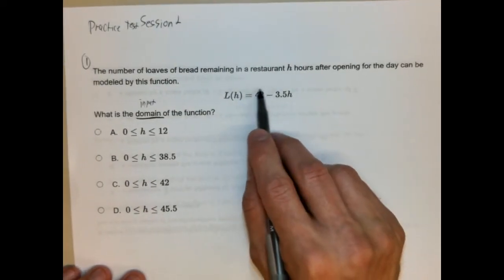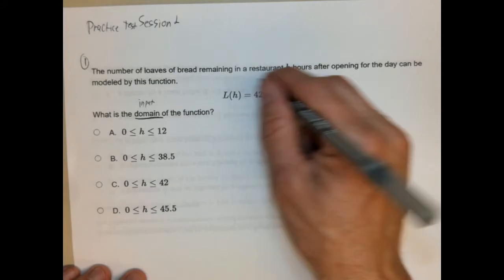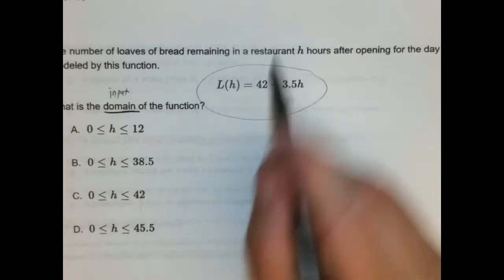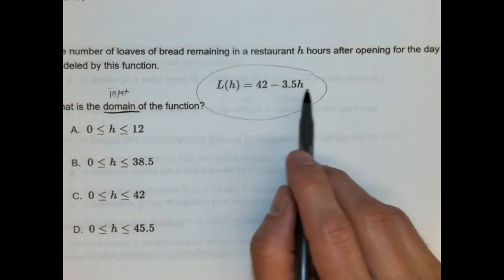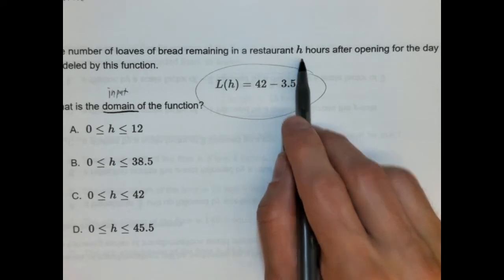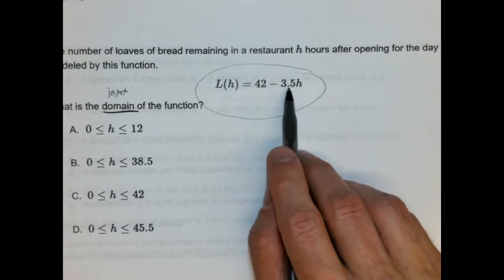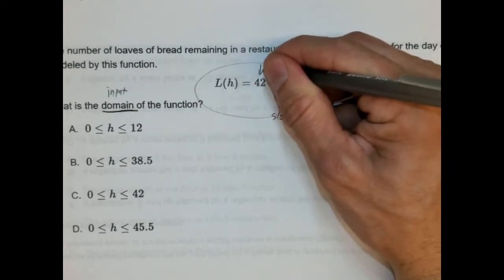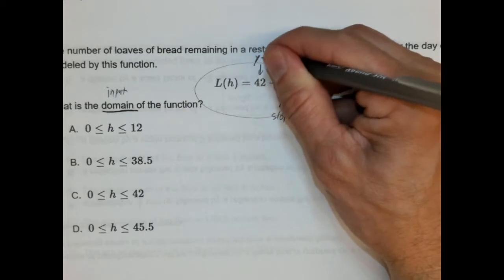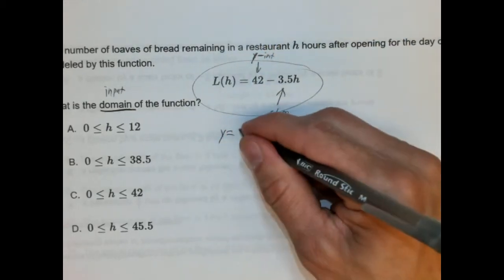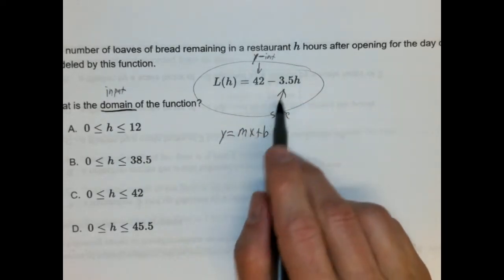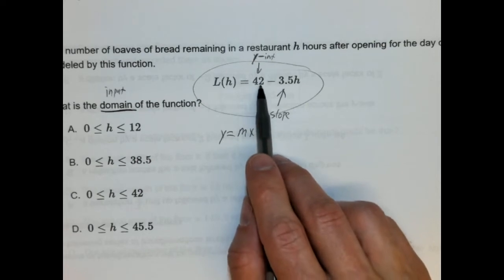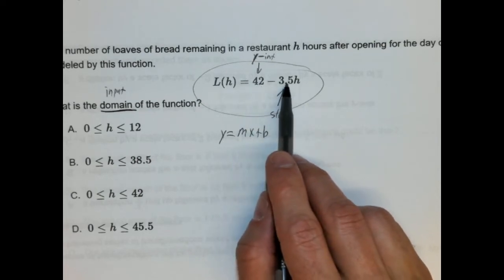And they give us a series of values that the domain could be and you can tell that the domain is not represented by an X instead it's an H. But you can think of H as X and L of H is Y, right? This is a functional value. So we're starting with, well I don't get into it just yet, this is a linear function, right? So this is a lot easier if we can understand how a linear function is modeled, right? What this actually represents.